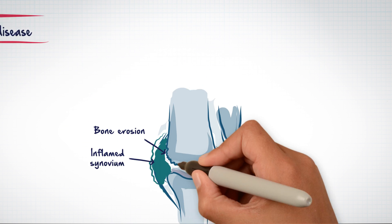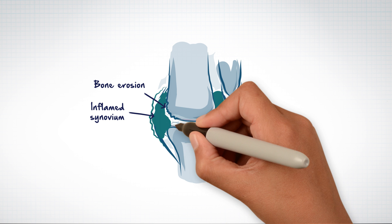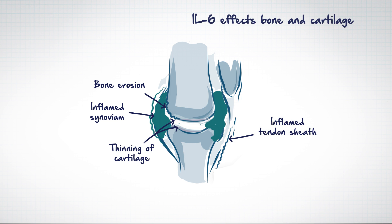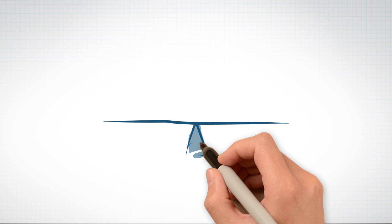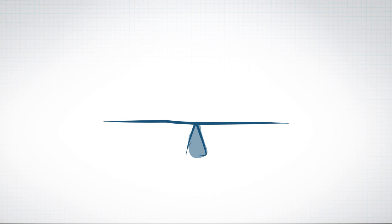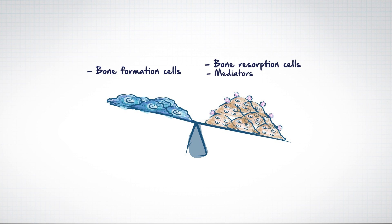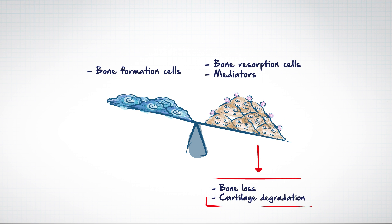IL-6 also contributes to RA through its effects on both bone and cartilage. The events leading to joint damage are promoted by altering the balance of bone formation cells, bone resorbing cells, and mediators, causing bone loss and cartilage degradation.